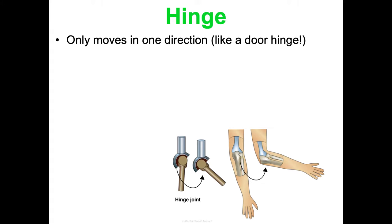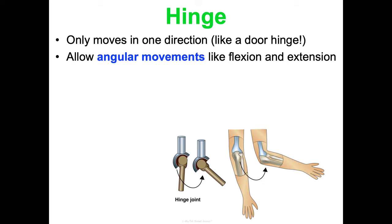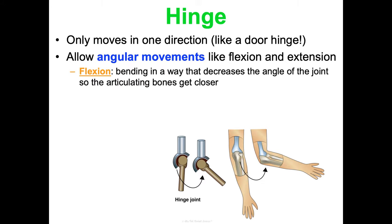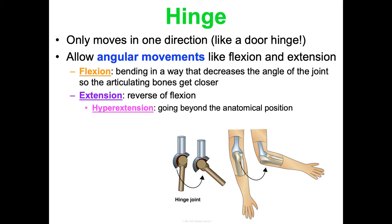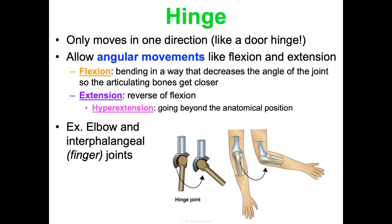Hinge joints move in only one direction, like a door hinge. They allow angular movements: flexion and extension. Flexion decreases the angle of the joint, bringing the articulating bones closer — like doing a bicep curl or bending your head toward your chest. Extension is the opposite — lifting the head back up or releasing the curl. Hyperextension occurs when the joint goes past the anatomical position. Hinge joints are found at the elbow and the interphalangeal (finger) joints.